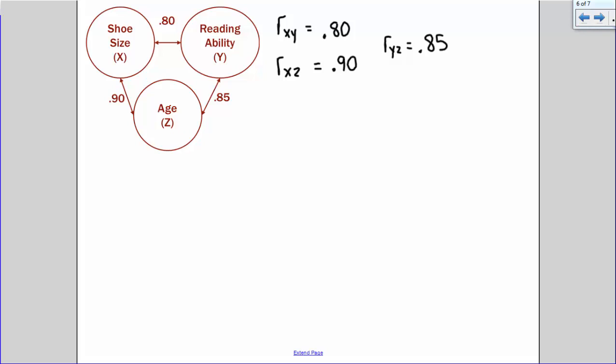Now, let's go ahead and take a look at the formula for the partial correlation. It looks complicated, but it really just requires you to plug in numbers. It's the interpretation of the partial correlation that students typically find most difficult. So the formula looks like this: the relationship between x and y after controlling for z is equal to the correlation between x and y minus the correlation between x and z multiplied by the correlation between y and z, divided by the square root of 1 minus r squared xz.